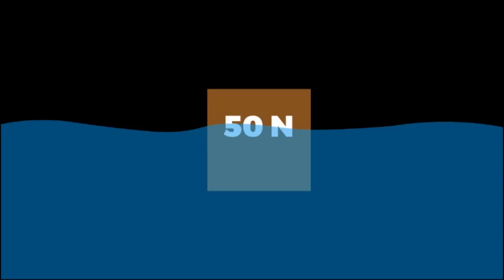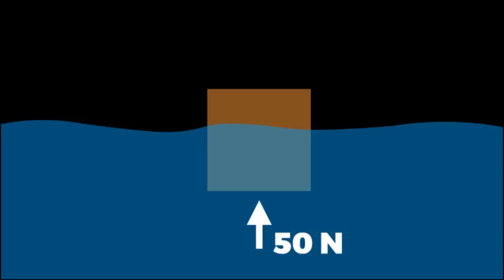So, we know that the weight of the object is 50 newtons, and since the object's floating freely on the water, that means that the buoyant force cancels it out, which means that there's 50 newtons of buoyant force. Now that we know the magnitude of the buoyant force, we can go backwards and calculate the volume of water that's displaced. The weight of displaced water is 50 newtons.